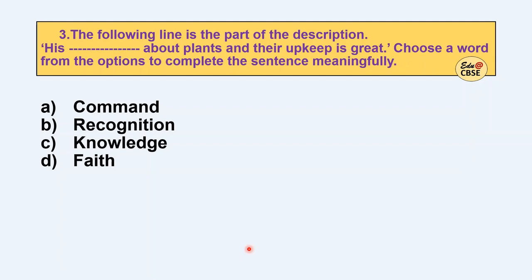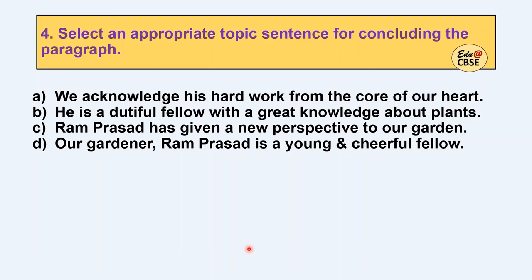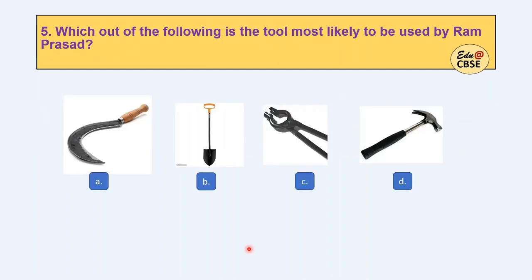Now fourth one: select an appropriate topic sentence for concluding the paragraph. Fifth one: which of the following is the tool most likely to be used by Ram Prasad? If you have been reading the options, you know by now Ram Prasad is the name of the gardener.